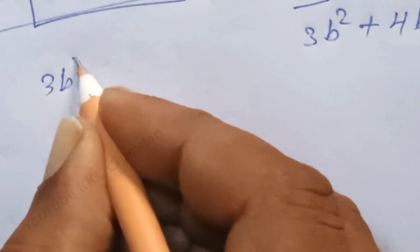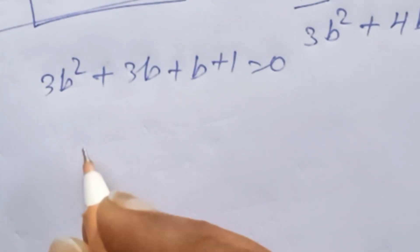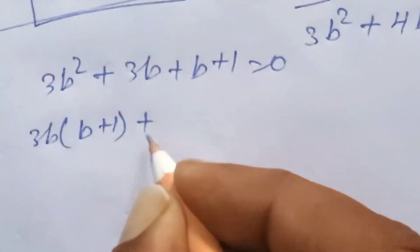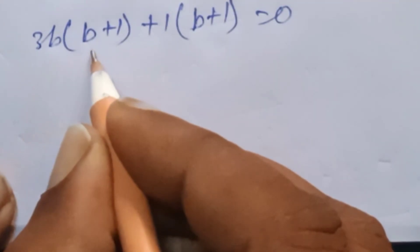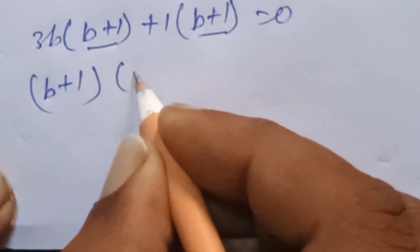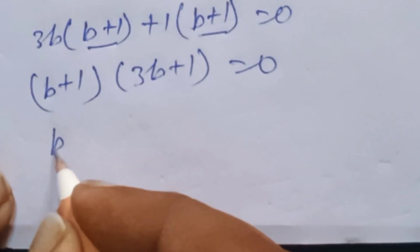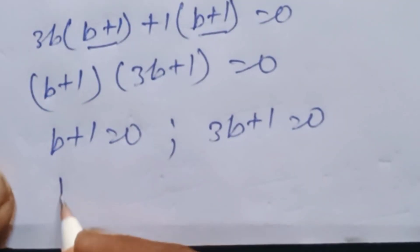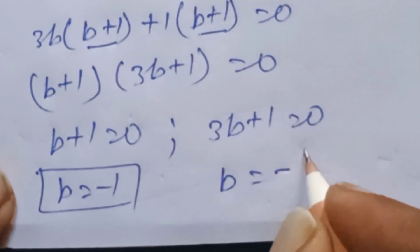Factoring the quadratic: 3b squared plus 3b plus b plus 1 is equal to 0. Taking common factors: 3b bracket open b plus 1 close, plus 1 bracket open b plus 1 close equals 0. Taking b plus 1 common: b plus 1 into 3b plus 1 is equal to 0. Two equations arise — first: b plus 1 equals 0, so b equals minus 1; second: 3b plus 1 equals 0, so b equals minus 1 divided by 3.